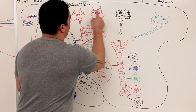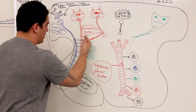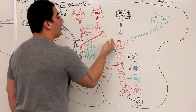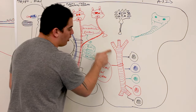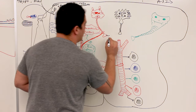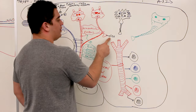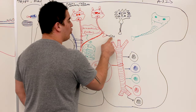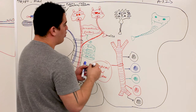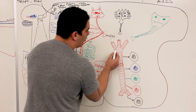Looking at this neuron here, we already said that this was the paraventricular nucleus. The paraventricular nucleus doesn't only secrete oxytocin — it's actually releasing other hormones off into the hypophysial portal system. The first hormone we're going to talk about is called CRH, which stands for corticotropin releasing hormone. CRH circulates down through the hypophysial portal system.